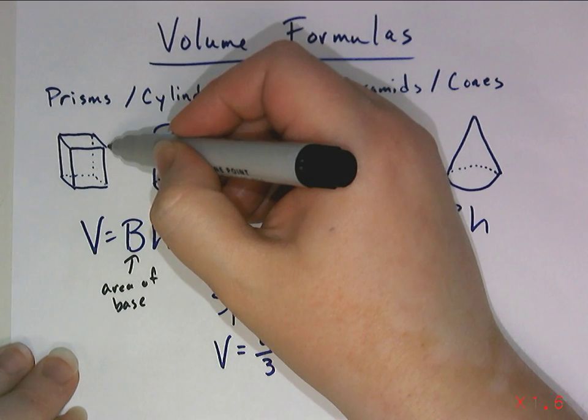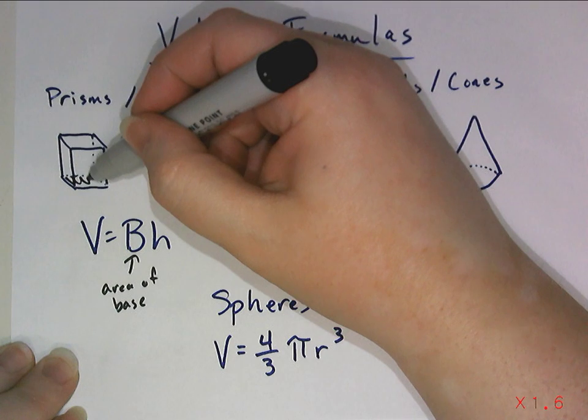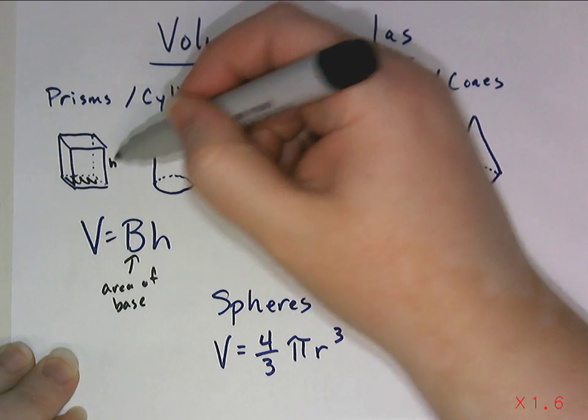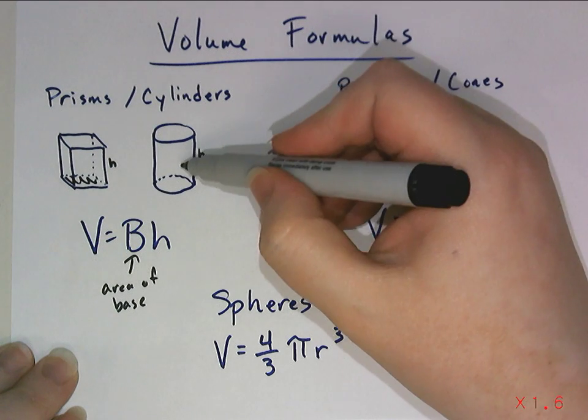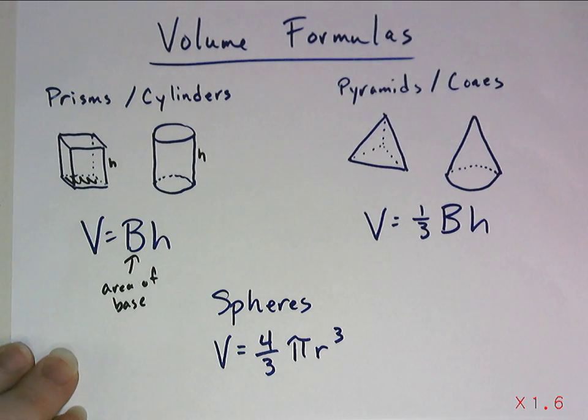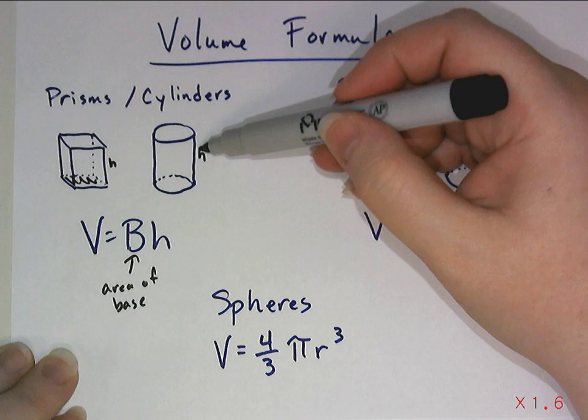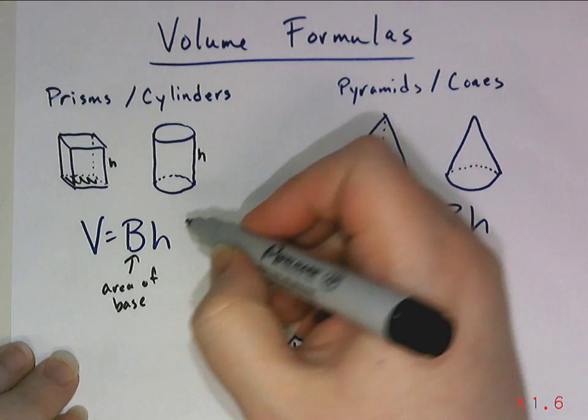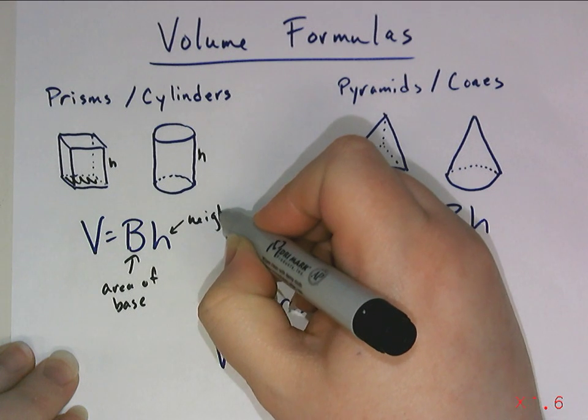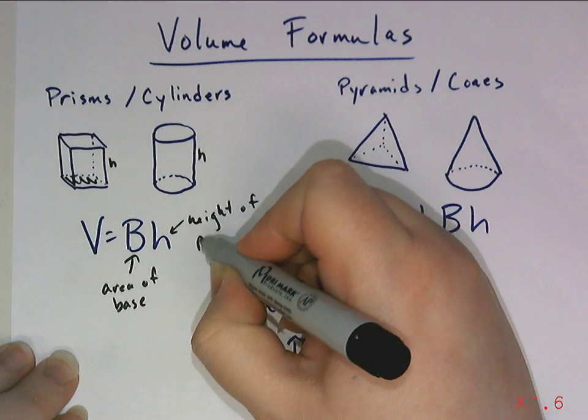The H would be, if this is the base down here, the H would be this distance here. Our cylinder, there's our H. Even if the cylinder is turned on its side, the distance between those bases is the height of that cylinder. So that's what needs to go here. You need to make sure that you're talking about the height of the prism or the cylinder.